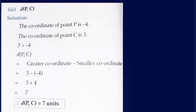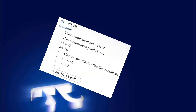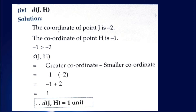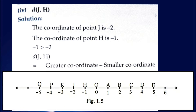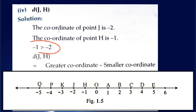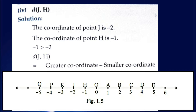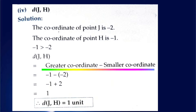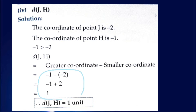So the distance between point P and point C is 7 units. Next, the fourth one: we have to find the distance between J and H. The coordinate of point J is minus 2 and the coordinate of point H is minus 1. Minus 1 is greater than minus 2 because as we go left on the number line, the value decreases. The distance between J and H equals greater coordinate minus smaller coordinate: minus 1 minus (minus 2). Two minus signs together appear here.